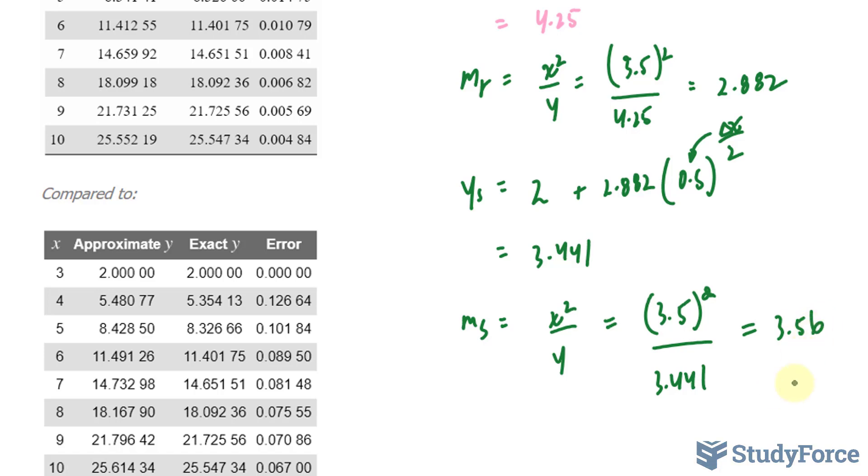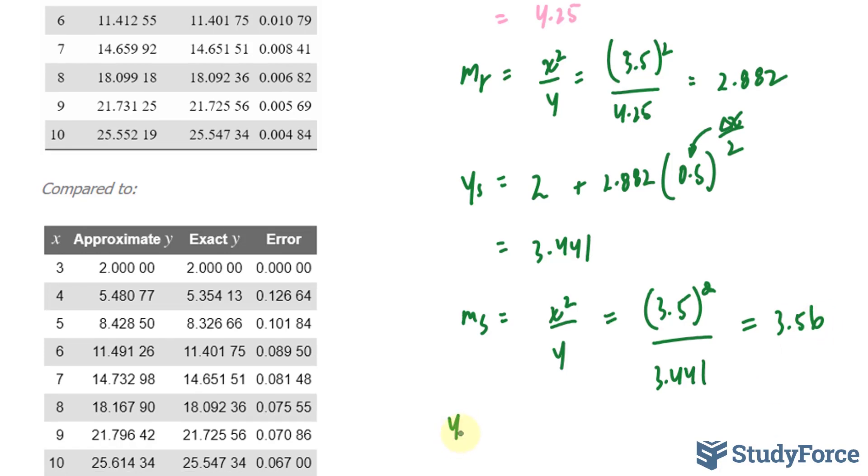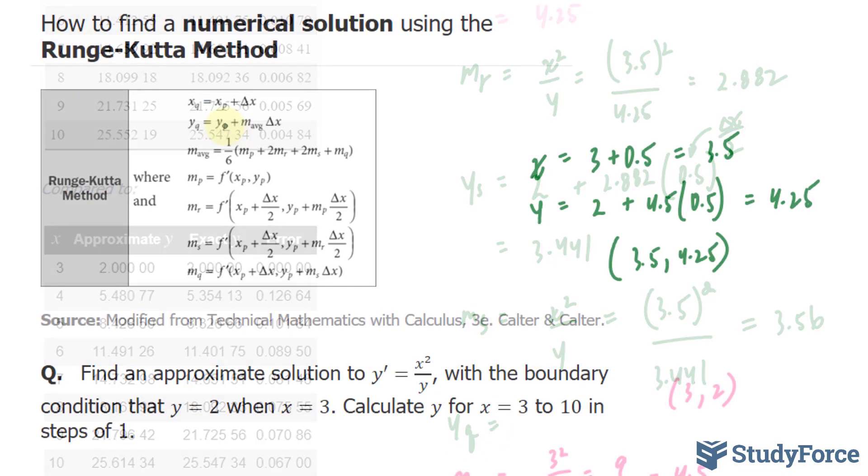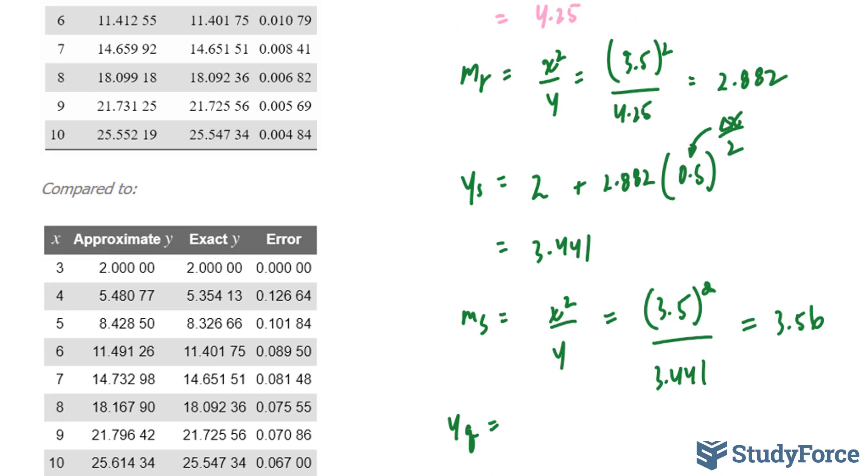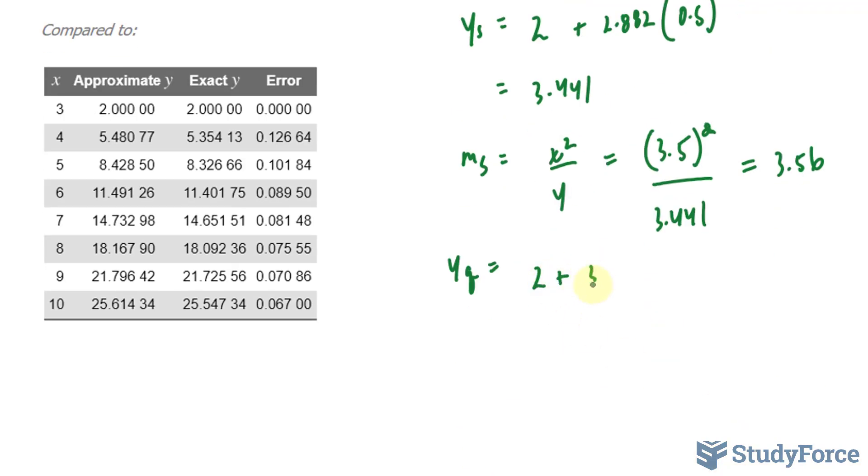Finally, once you've found m_s, you need to find y_q. To find y_q, we use this formula right here, where it's equal to the previous y, 2, plus the slope we just found, 3.560, multiplied to, this time, Δx, which is 1. Let me write that down underneath: 2 + 3.56 times Δx, which was 1. This should give us 5.560.